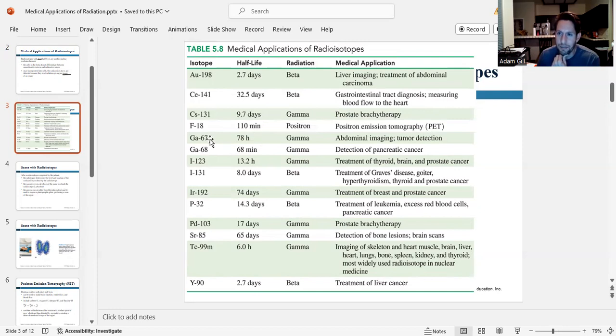Gallium-67 has a half-life of 78 hours. It's a gamma emitter. We use this for abdominal imaging and tumor detection. Gallium-68 is also radioactive. It has a very short half-life of just over an hour, gamma emitter. We use this to detect pancreatic cancer.